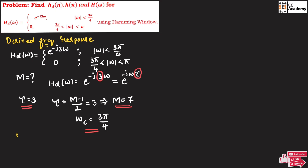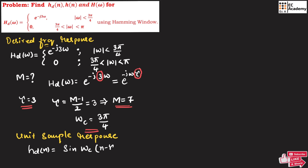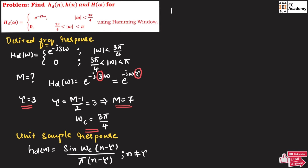Now let us write the unit sample response. The unit sample response is given as: hd(n) = sin(ω_c · (n − τ)) / (π · (n − τ)) for n ≠ τ, and hd(n) = ω_c / π for n = τ. These are the standard formulas you need to remember.